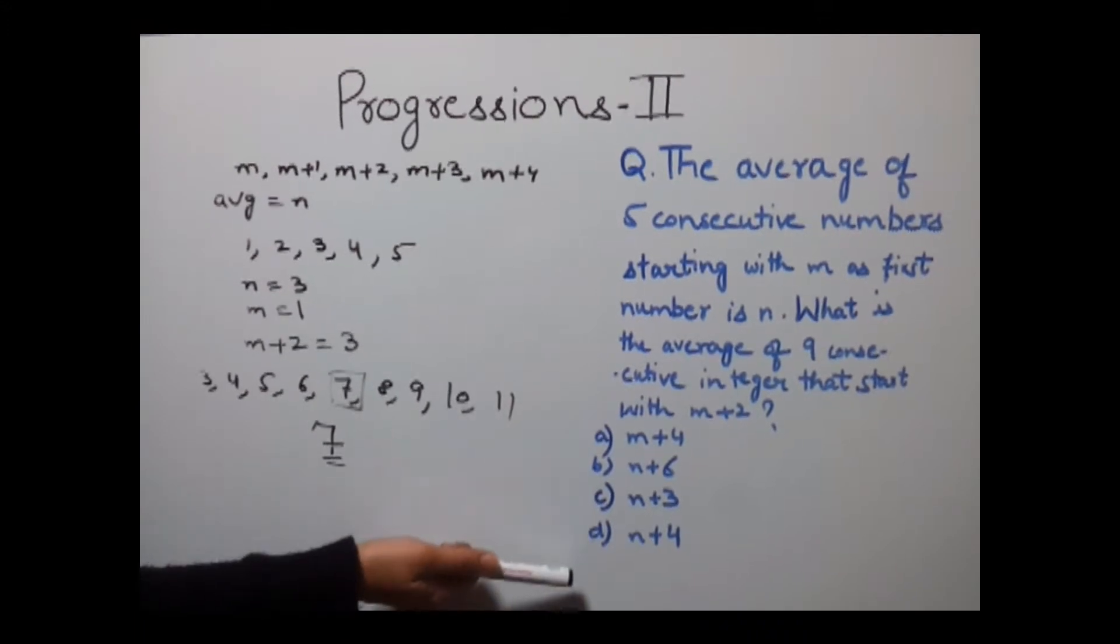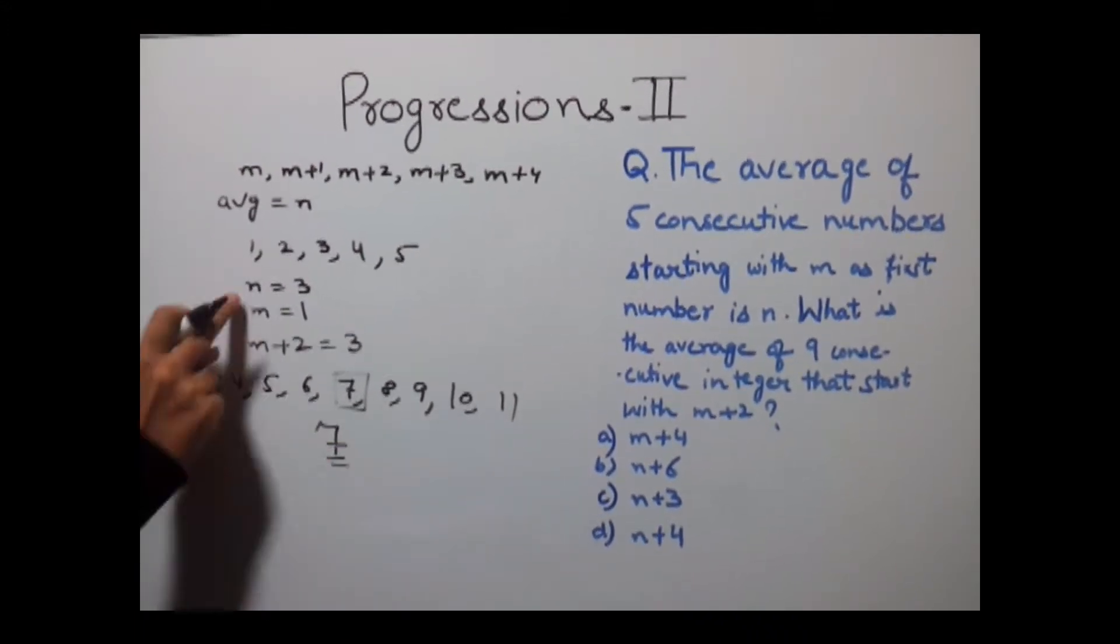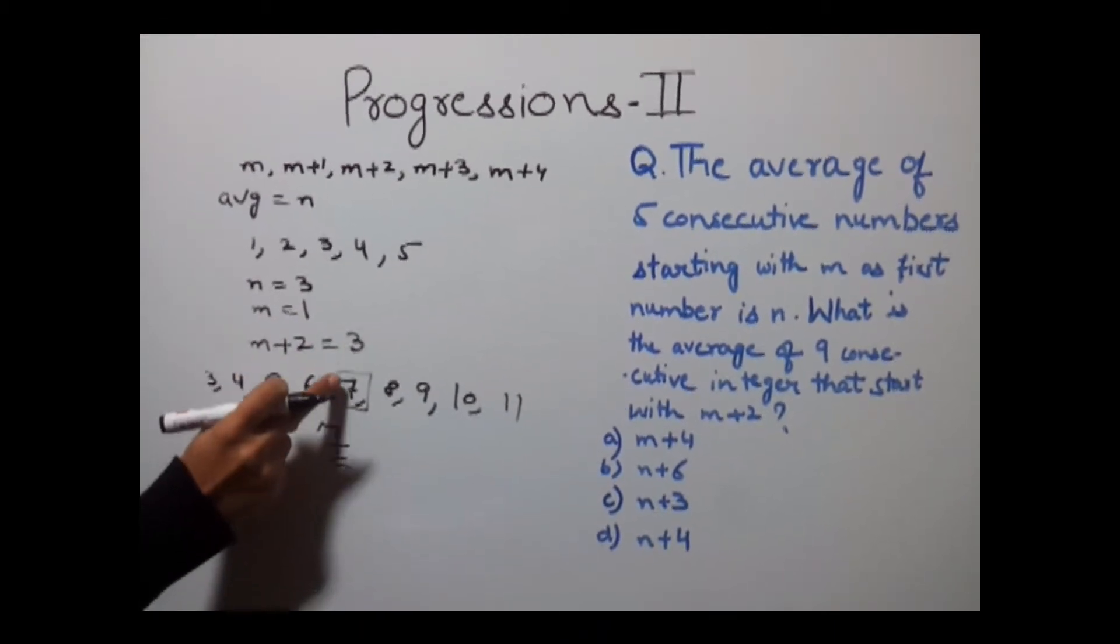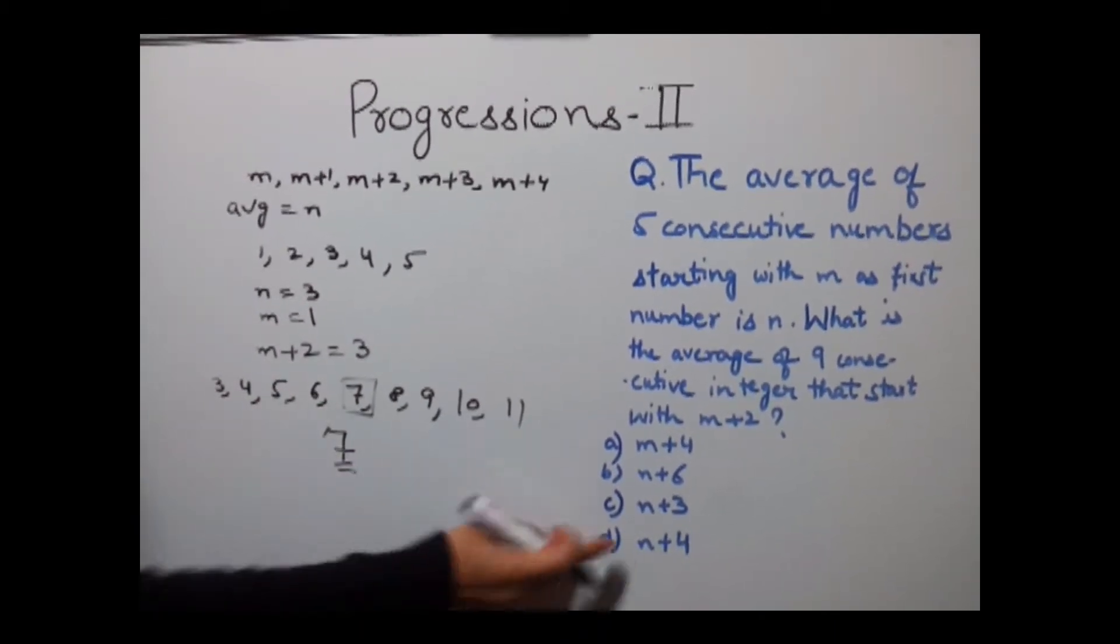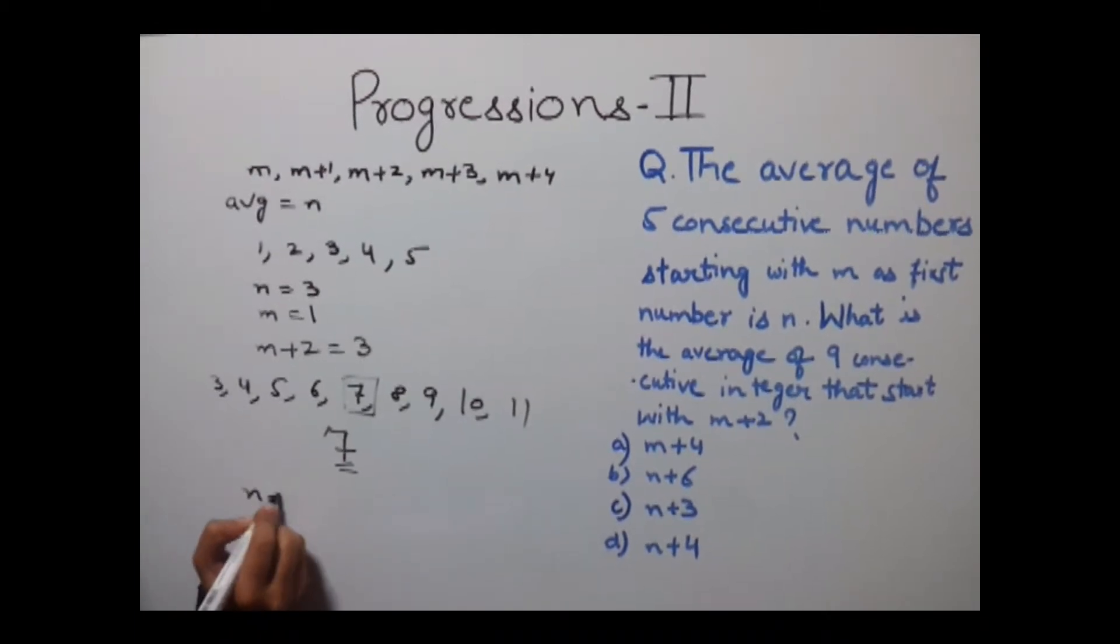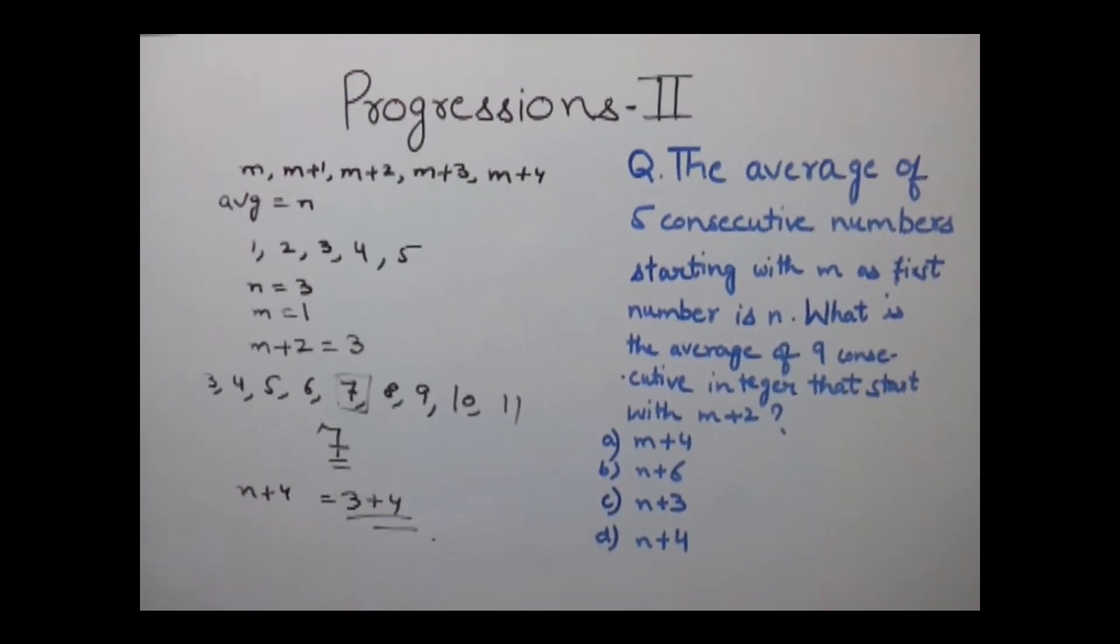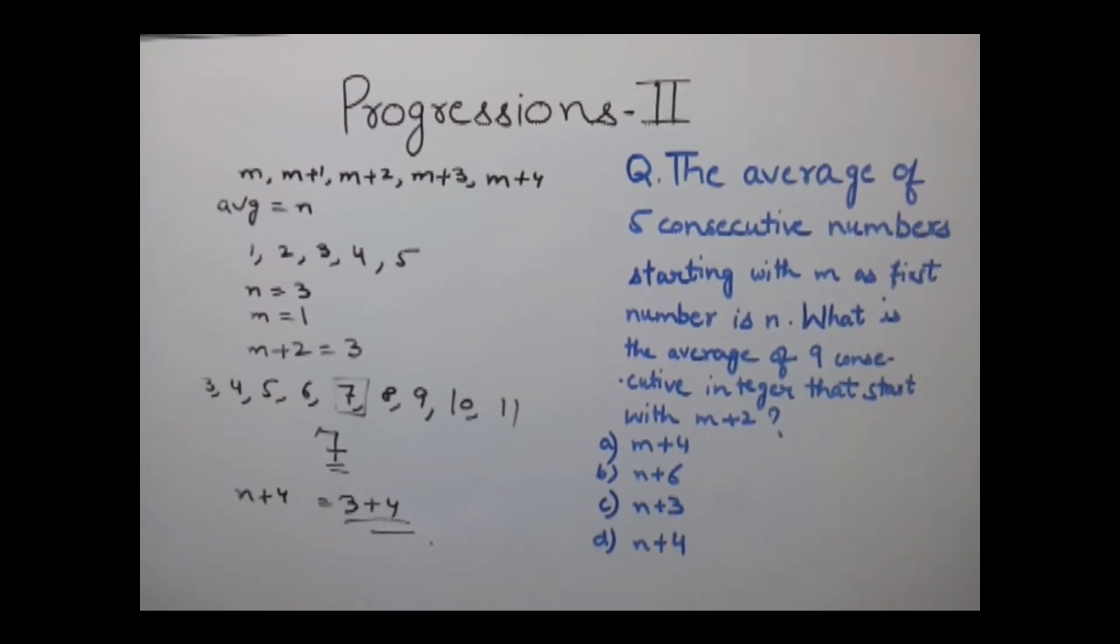Now what would be the answer among all these? The value of n is 3, so it should be n+4, that is 3+4 equals 7. So our answer is n+4, which gives us 3+4 as the answer. Let's have another example.